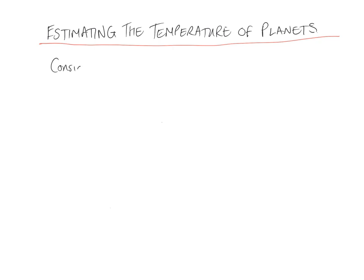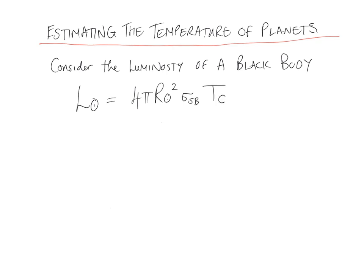So consider the equation for the luminosity of a blackbody. For example, for the sun, the luminosity of the sun is 4π times the radius of the sun squared, so it's just the surface area of a spherical sun, times the Stefan-Boltzmann constant, and then the surface temperature of the sun to the fourth power.